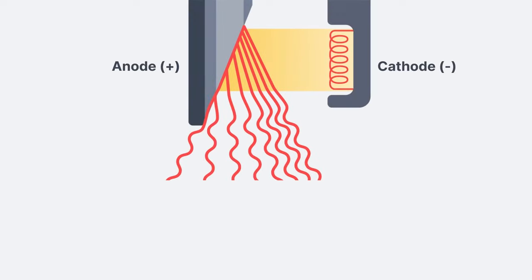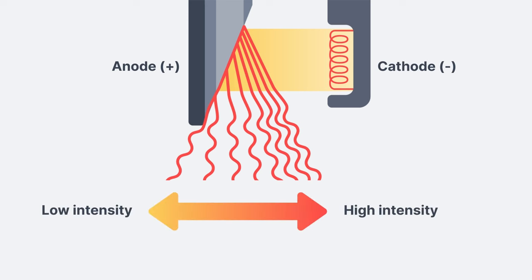Unfortunately, the angled anode does have one negative consequence. The angle of the anode causes a variation of the beam's intensity across the x-ray field. Specifically, there are fewer x-ray photons on the anode side of the beam compared to the cathode side. So we would say that the cathode side has higher intensity and the anode side has the lower intensity.